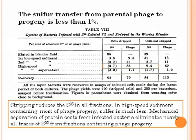Table 8 shows that sulfur transfer from parental phage to progeny is less than 1%. From the table, we know that stripping reduces S35 in all fractions. After separation, the radioactive tracer was found in the low-speed sediment protein shells. In the high-speed sediment, which contains most of the phage progeny, sulfur is much less. Mechanical separation of protein coats from infected bacteria eliminates nearly all traces of S35 from fractions containing phage progeny.